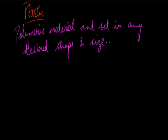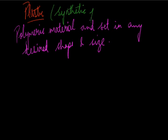Nowadays we say it is a plastic world. Everything generally — the things used or made by man — they are not made by nature. So plastic can also be said to be a material which is made by man. It is a type of synthetic polymer, as it is synthesized in a lab. So you can call plastic a synthetic polymer which can be made in any desired shape and size.